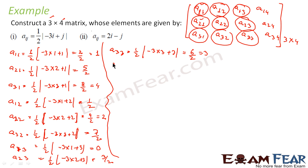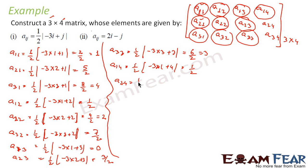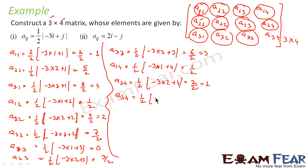For a14: (1/2)|−3(1)+4| = (1/2)|1| = 1/2. For a24: (1/2)|−3(2)+4| = (1/2)|−2| = 2/2 = 1. For a34: (1/2)|−3(3)+4| = (1/2)|−5| = 5/2. I now have all the elements.